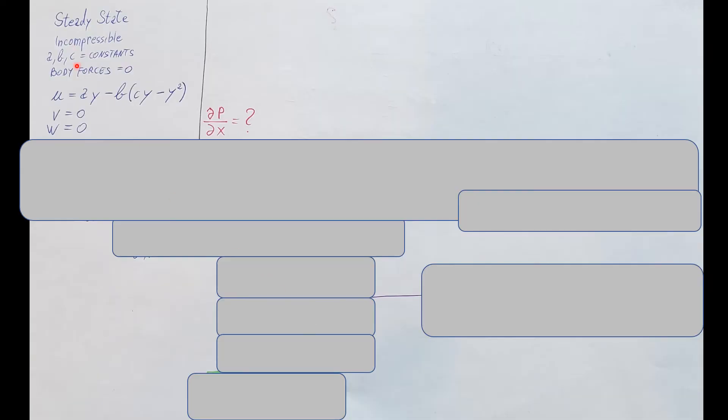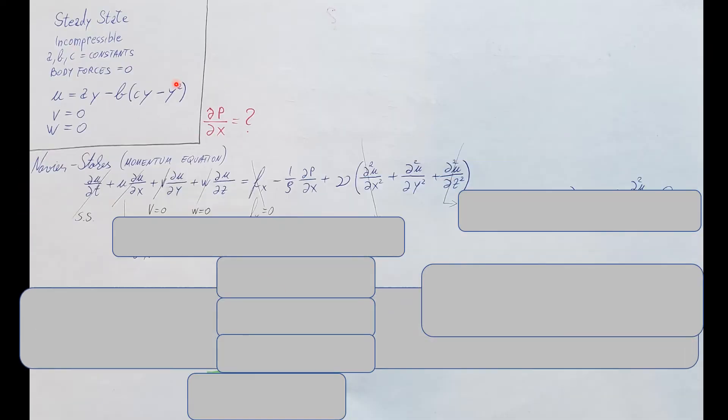So, the Navier-Stokes equation. Like they said, that's what we're going to have to write up. And they are asking for the pressure gradient in the X direction. Therefore, we're going to write up the X component version of the momentum equation. Navier-Stokes or conservation of momentum, same thing. They're just two names for the same thing. So, this is right here. We can see the Navier-Stokes equation, and let's start canceling some things out.